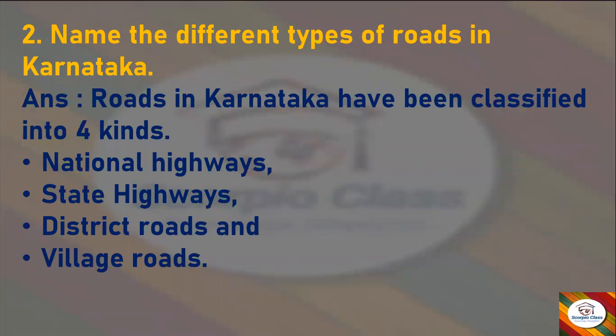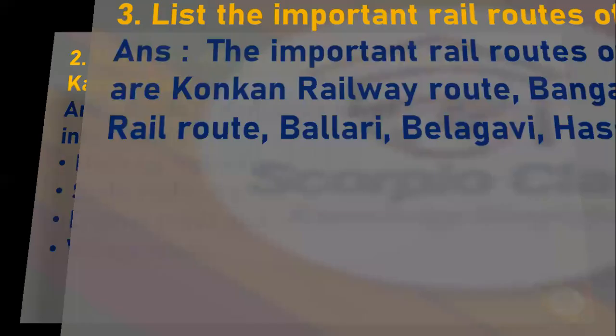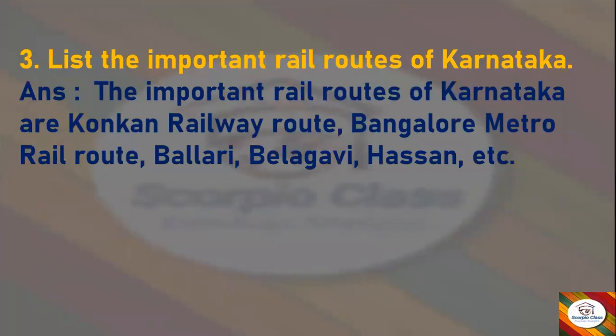Next question — Name the different types of roads in Karnataka. Answer: Roads in Karnataka have been classified into four kinds: National Highways, State Highways, District Roads, and Village Roads. Next question — List the important rail routes of Karnataka. Answer: The important rail routes of Karnataka are the Konkan Railway route, Bangalore Metro Rail route, Ballari, Belagavi, Hassan, etc.